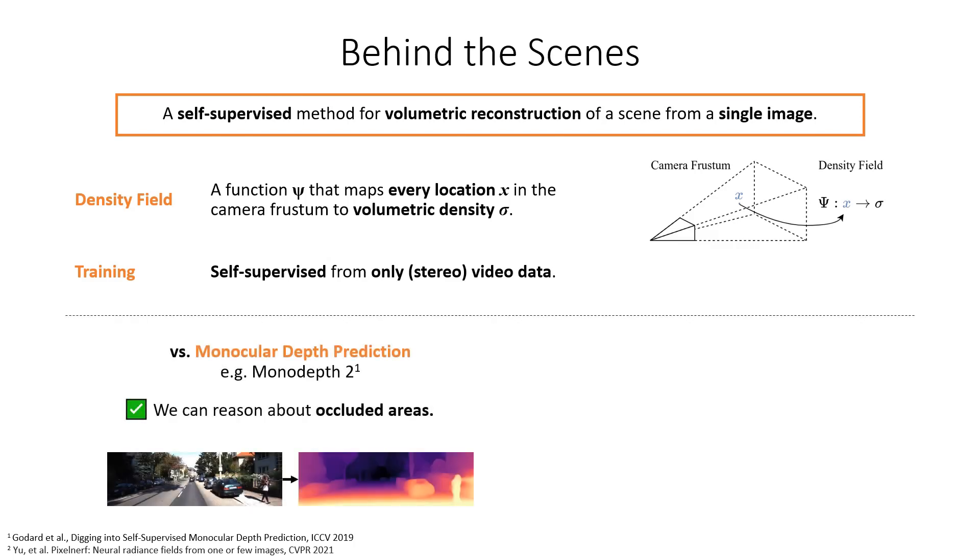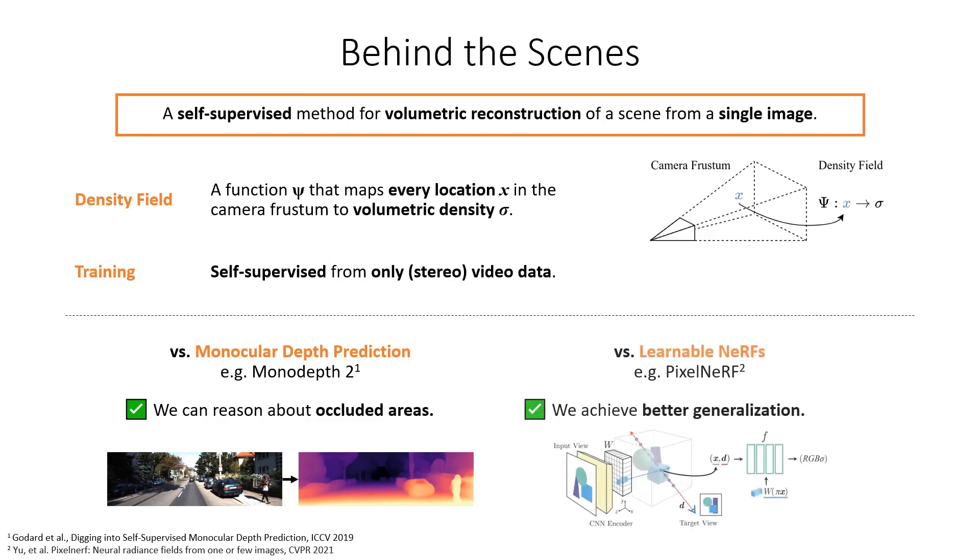Unlike methods for depth map prediction, for example MonoDepth2, our method can reason about areas that are occluded in the input image. Compared to learning-based neural radiance fields, for example PixelNerf, our representation is much easier to predict, improving generalization capabilities.